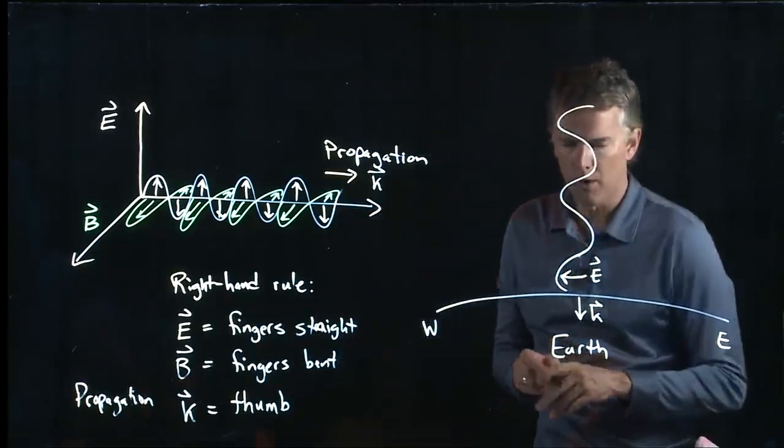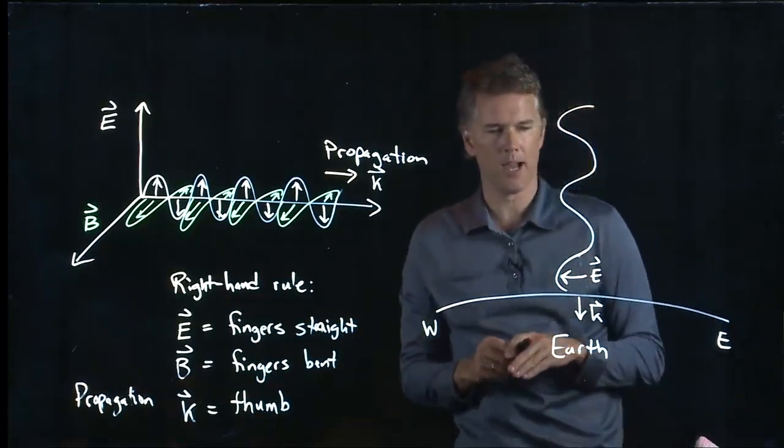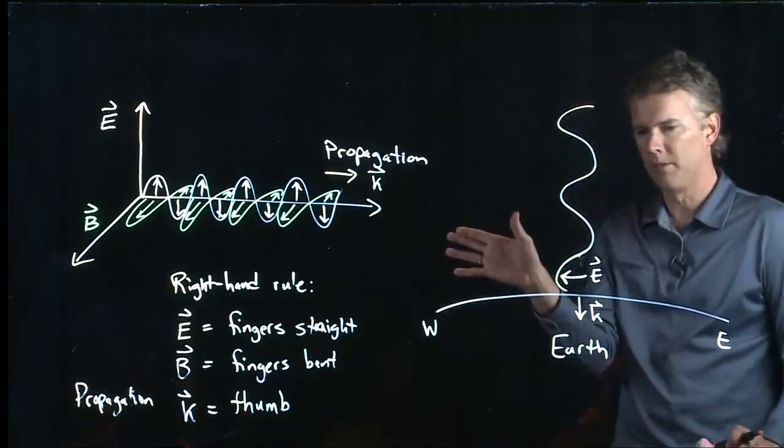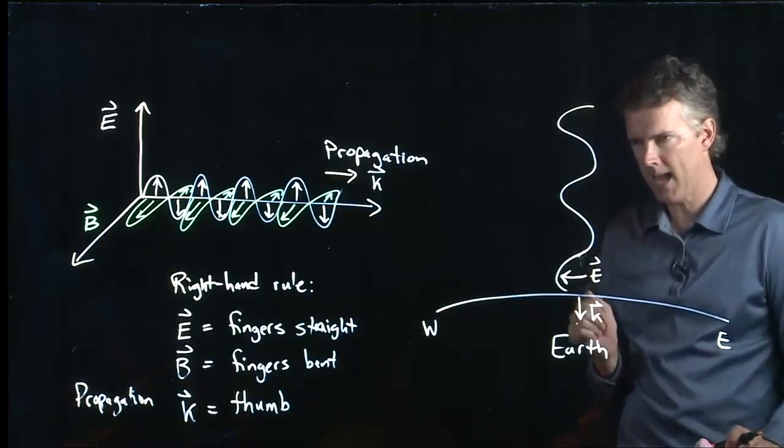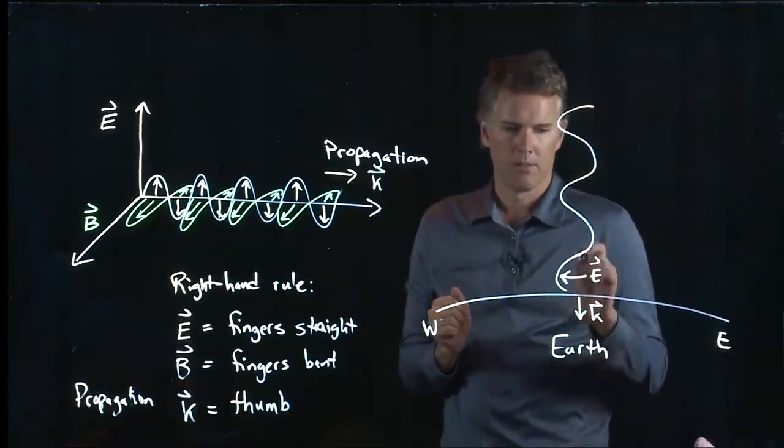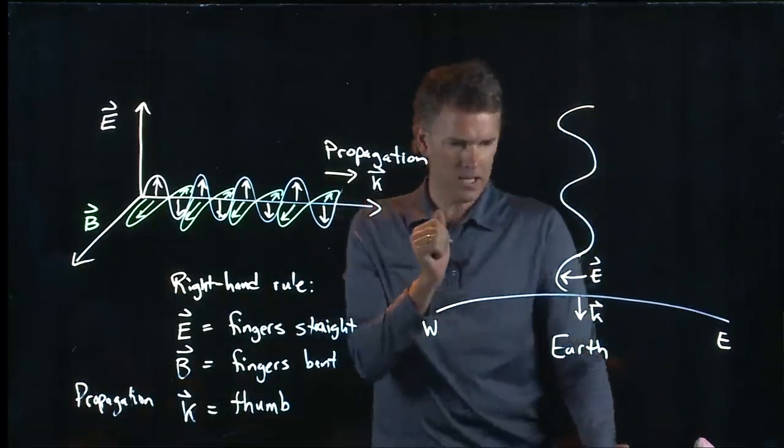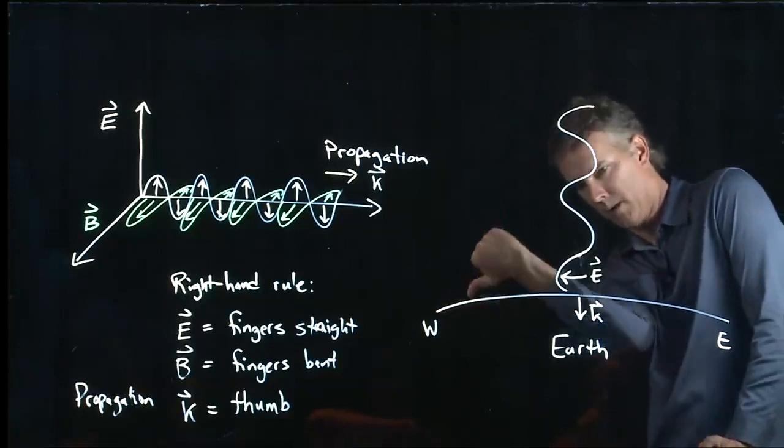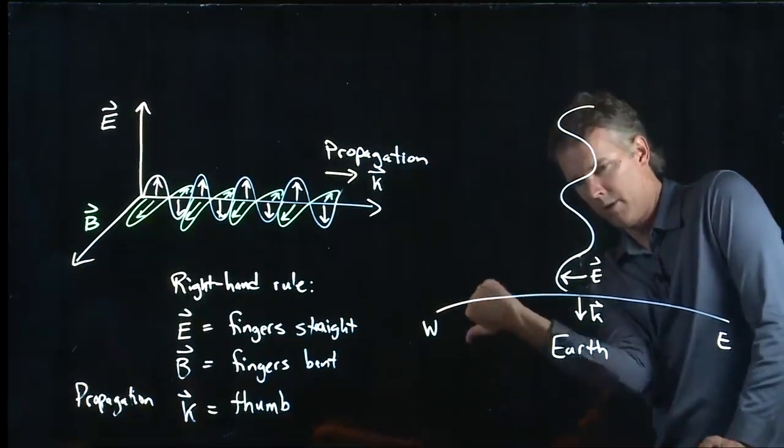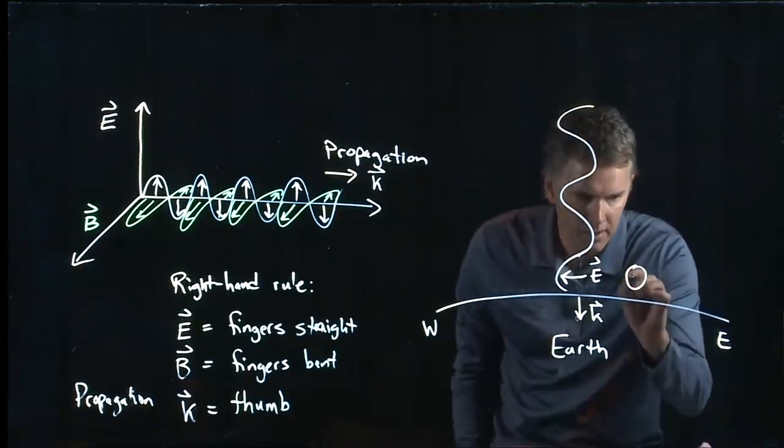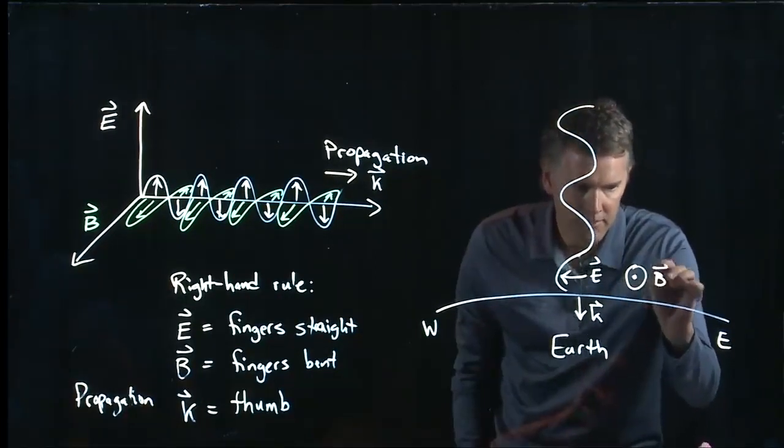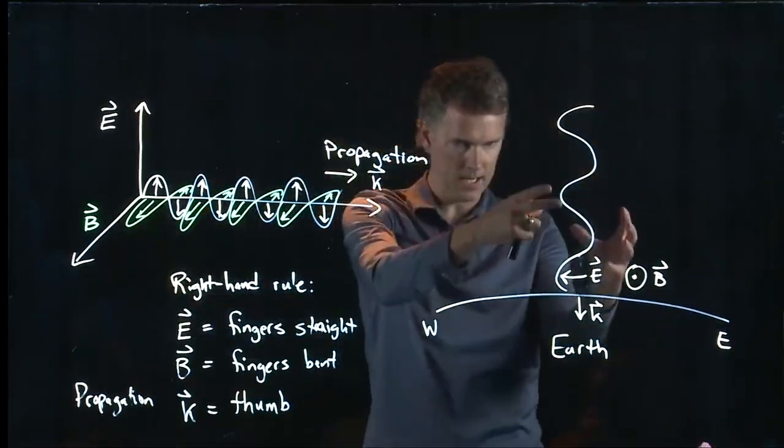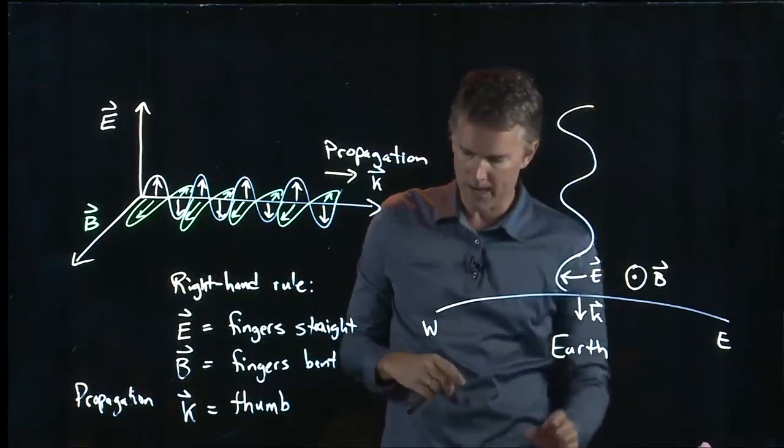So the only option is into the screen or out of the screen. It's either north or south. And if north is into the screen, let's see what we would get. We would get E cross B would get me a K that is pointing. Well, let's see if we do this right. We've got an E and then if B was coming in, it would give me a K like that. So it looks like we do want a B field that is doing that. We've taken this picture and we've rotated it to this where the B is going into and out of the board.